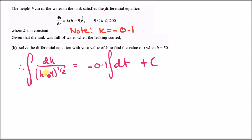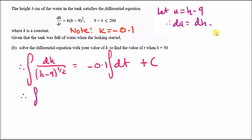To integrate the left side, use a substitution. Let u equal h minus 9, so du equals dh. We replace (h minus 9) with u and dh with du. The integral becomes the integral of 1 over u to the power of a half du, which is the same as u to the power of negative a half.